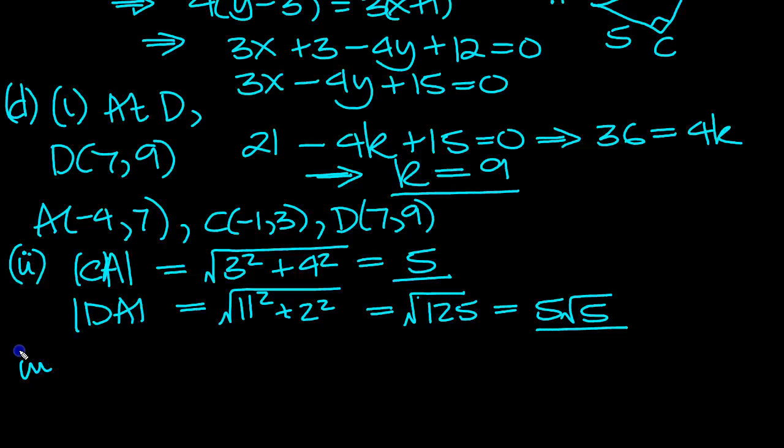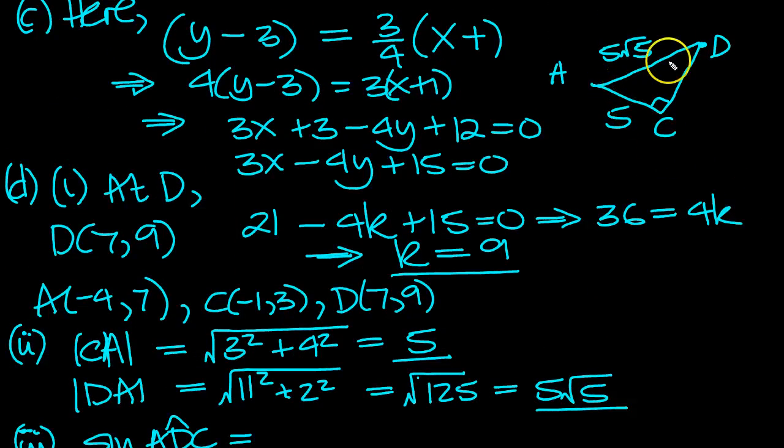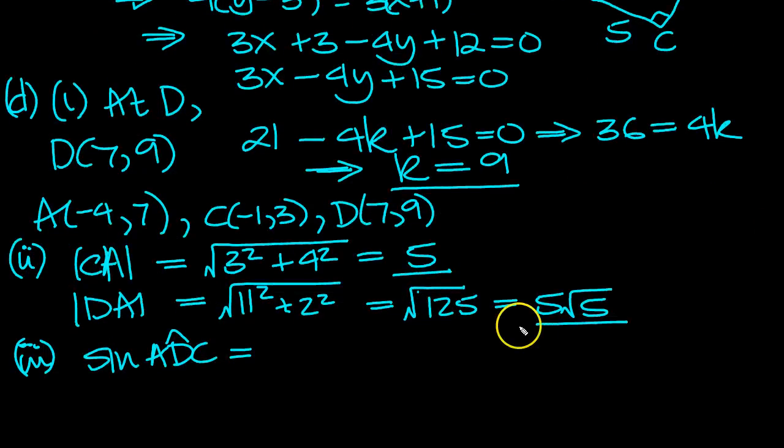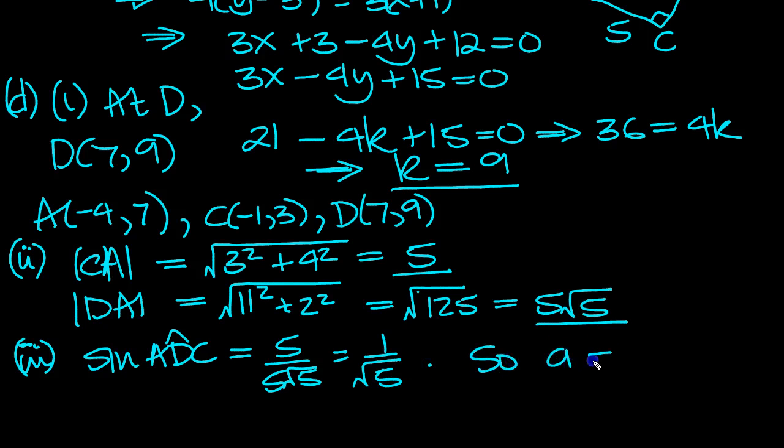So part 3, sine of ADC. It's a right angle triangle. So let's have a look at it. ADC will be this angle here. It's the opposite, 5, over the hypotenuse, which is 5√5. So it's 5 over 5√5, which is 1 over √5. So the A value that we had in the question is equal to 5.